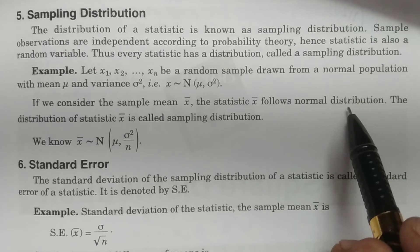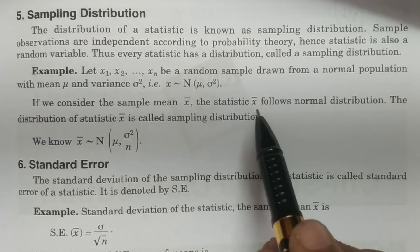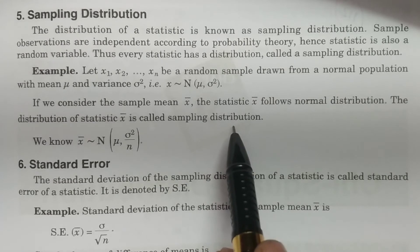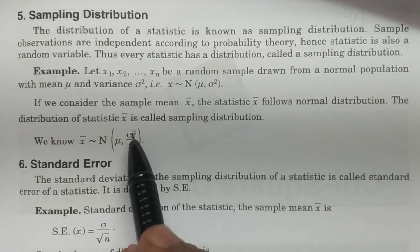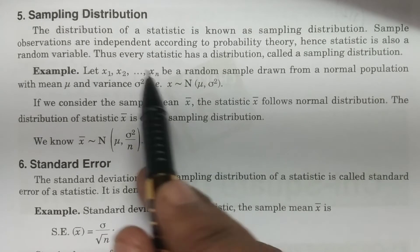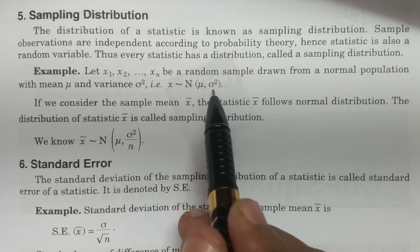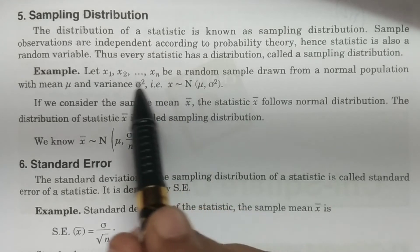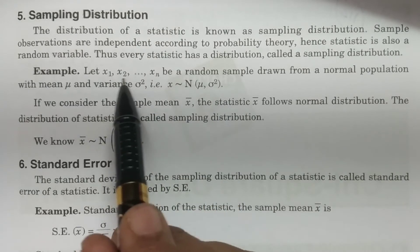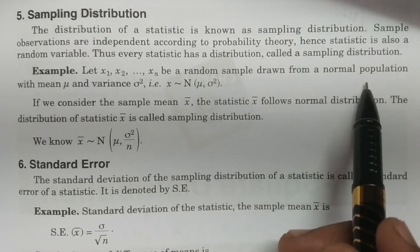Using properties such as the additive property and linear combinations, it can be proven that x-bar follows a normal distribution. The distribution of x-bar is called the sampling distribution. If x₁, x₂, ..., xₙ are a random sample drawn from a population, x-bar follows a normal distribution with mean μ and variance σ² — the population mean and population variance.